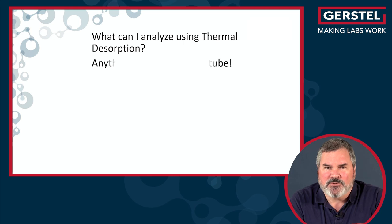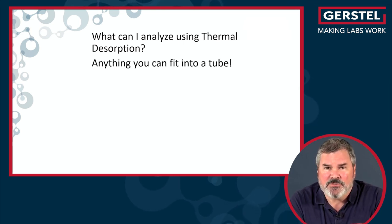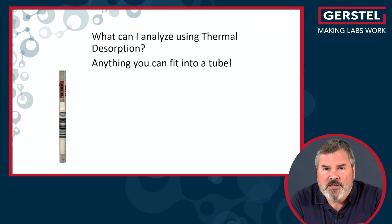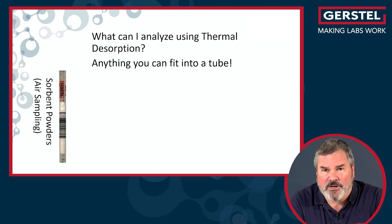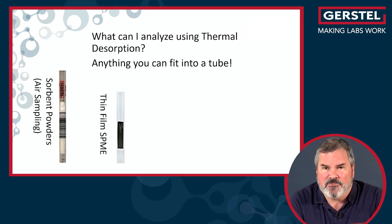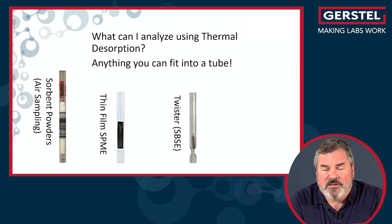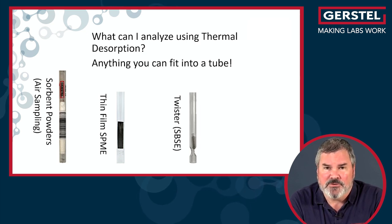What can you analyze using thermal desorption? Well, basically anything you can fit inside a thermal desorption tube — that's a wide variety of things. If you're interested in air quality, it would be a tube filled with powdered sorbents, because you're going to sample air through that tube and concentrate it there. You can also do things like thin film SPME, which is used to grab trace compounds out of water for food quality or environmental purposes. Or a similar technique, twister or SBSE, which is used the same way — especially powerful for diagnosing flavor and environmental water problems.